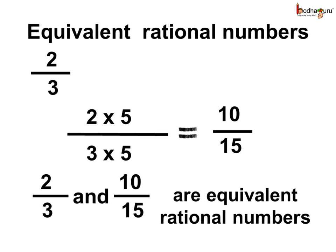For example, 2 by 3 is a rational number. If we multiply both the numerator and the denominator by 5, we get 2 multiplied by 5 equal to 10, and 3 multiplied by 5 equal to 15, giving us 10 by 15. Hence, 10 by 15 is an equivalent rational number of 2 by 3. As their values are the same and both are rational numbers, we say they are equivalent rational numbers.